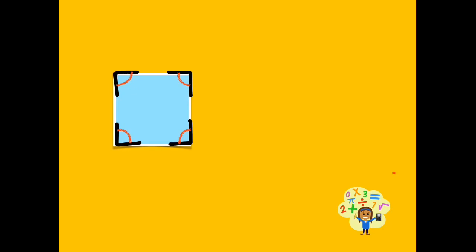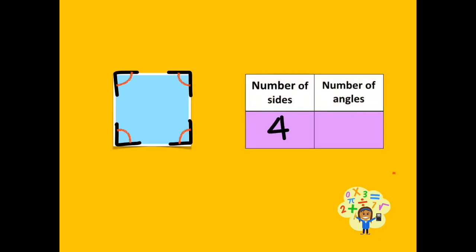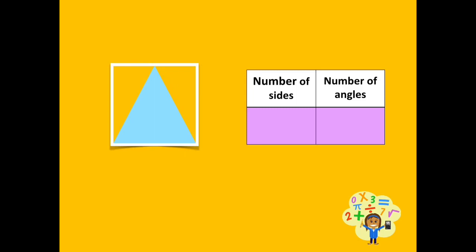How many sides are there in a given square? How many angles are there in a square? There are four angles in a square. Let's look at the given triangle. How many sides are there in a triangle? There are three sides in a triangle. How many angles are there in a triangle? There are three angles in a triangle.